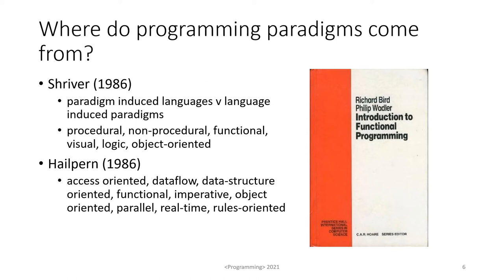Also in 1986, Shriver in IEEE Software distinguished between paradigm-induced languages and languages that induce paradigms, and he identified the paradigms of procedural, non-procedural, functional, visual, logic, and object oriented. In the same issue, Hale Purn identified the paradigms of access oriented, data flow, data structure oriented, functional, imperative, object oriented, parallel, real time, and rules oriented.